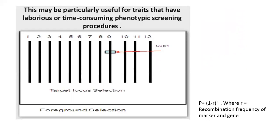First, we have to select the target locus of the gene we want to transfer from one parent to another target organism. This can be easily identified using various genetic and biotechnological tools. The probability of the target gene can be calculated using the equation P = (1 − R)², where R is the recombination frequency between marker and gene. Using this simple recombination frequency calculation, we can easily identify the probability of the target locus.